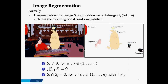Formally, segmentation can be defined as follows. The segmentation of an image Omega is a partition into sub-images S_i such that three constraints are satisfied. First, the sub-images cannot be empty. Second, the union of the different sub-images should be the entire image. Third, the intersection of any two sub-images should be equal to the empty set — so the different regions that we segment in the image cannot overlap.